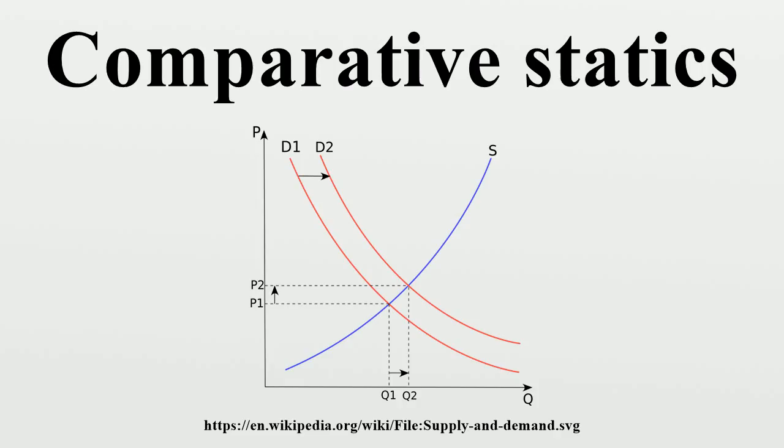Moreover, Paul A. Samuelson's correspondence principle states that stability of equilibrium has qualitative implications about the comparative static effects. In other words, knowing that the equilibrium is stable may help us predict whether each of the coefficients is positive or negative.